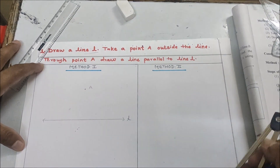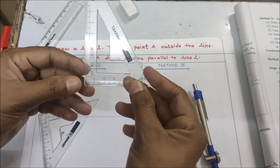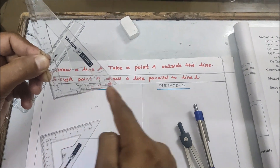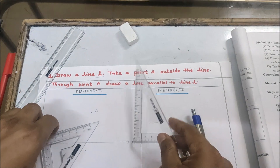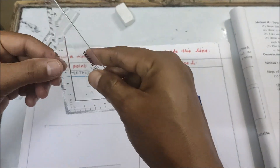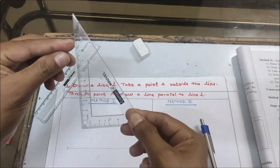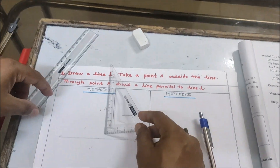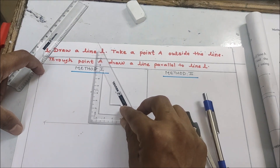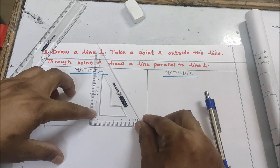Now we will take a set square. You can see it here — the set square has two numbered edges, and these two edges we use to draw a parallel line. One edge of the set square will lie on line l and the other edge will touch the point A. You can see how I am placing it — one edge is on the line and the other edge is touching the point.